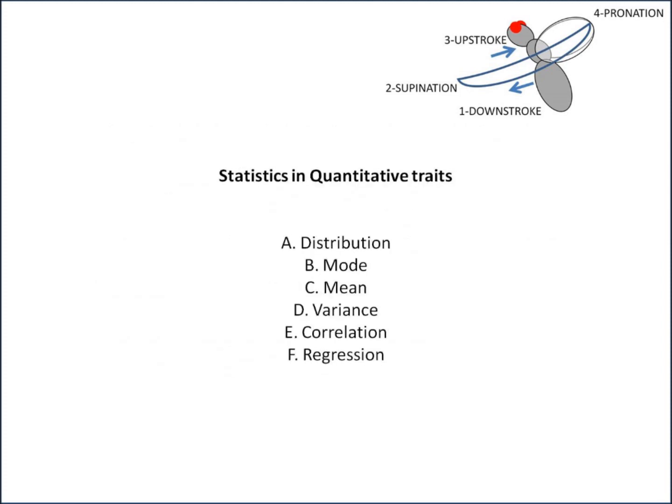We need to cover some of the essential statistics used in quantitative traits. Because quantitative traits exhibit a continuous distribution of phenotypes, they cannot be analysed in the same manner as traits controlled by a few genes. Rather, these traits are described in terms of statistical parameters. The two primary statistics used are the mean and the variance, but you also need the distribution, possibly the mode, and you want to look at correlation and regression.